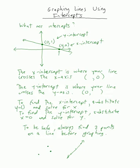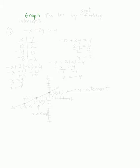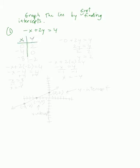Alright, so let's practice some problems. We're going to practice graphing the lines. The instructions say: graph the line by finding intercepts. So number one, the line is going to be negative x plus 2y equals 4. The way that we find intercepts — a nice way to lay out your work is to create a table, and we're going to plug in 0 for x and 0 for y to see what happens.